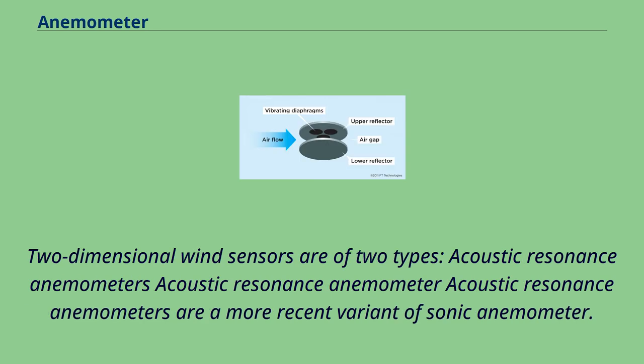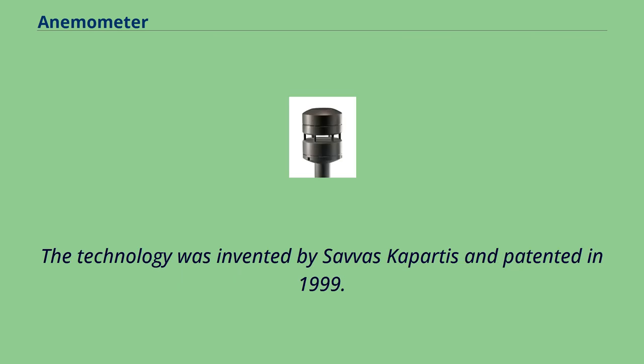Two-dimensional wind sensors are of two types, acoustic resonance anemometers. Acoustic resonance anemometers are a more recent variant of sonic anemometer. The technology was invented by Savvas Kapartis and patented in 1999.